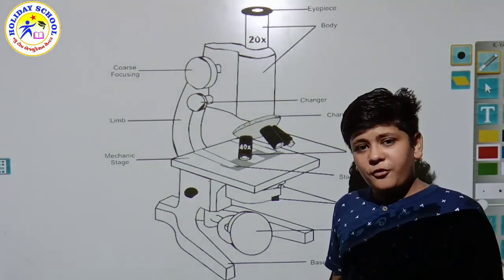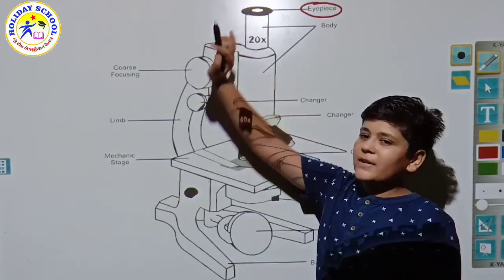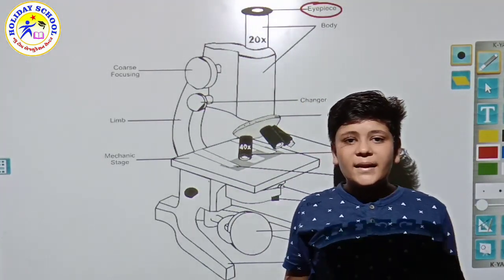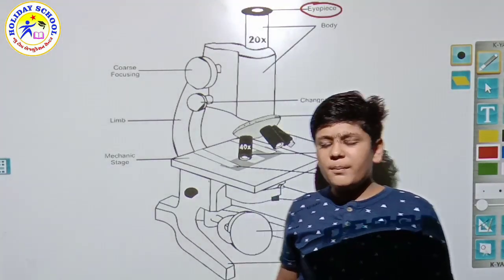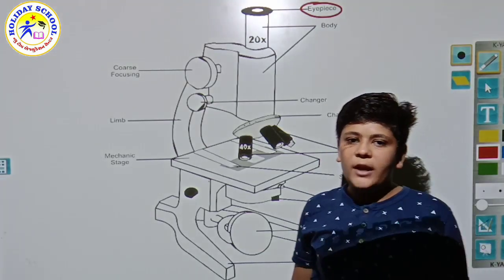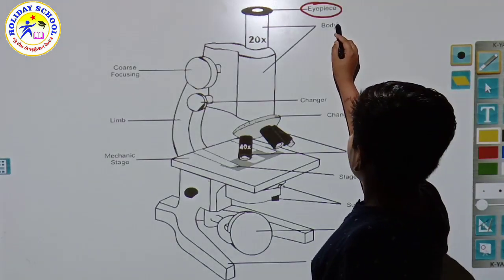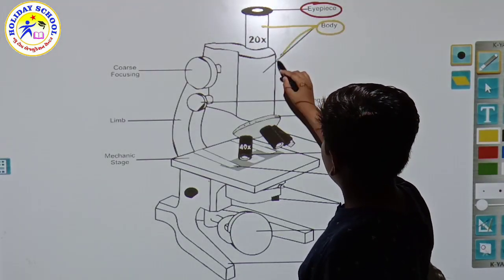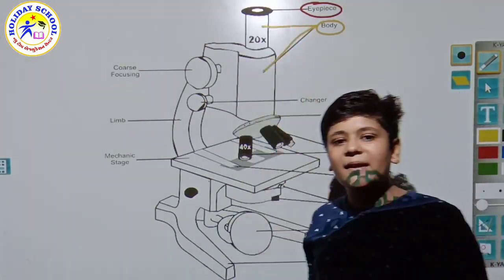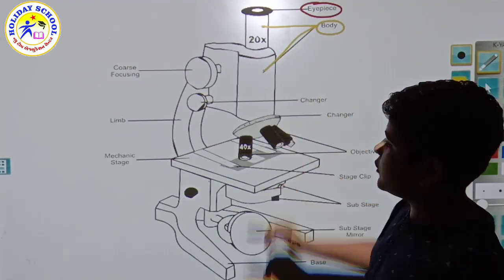Friends, first of all you can see here the eyepiece - this black colored part. From that we see things, like an onion peel or any leaf. After that, here is the body. Here there is a lens which is a 20 times zooming lens. This is the body of the microscope.